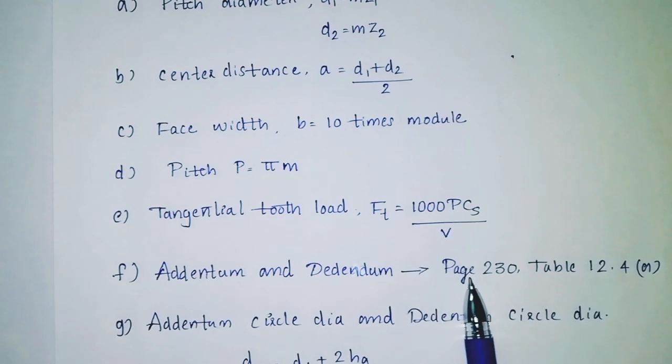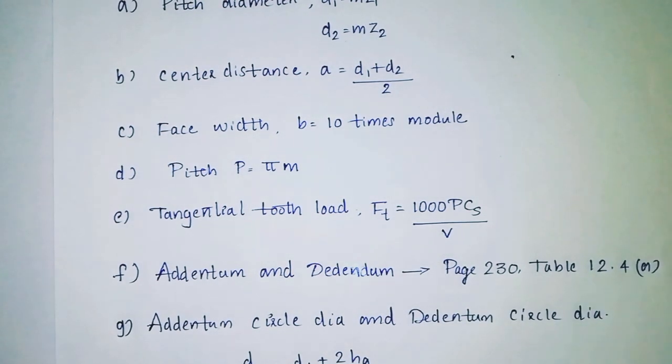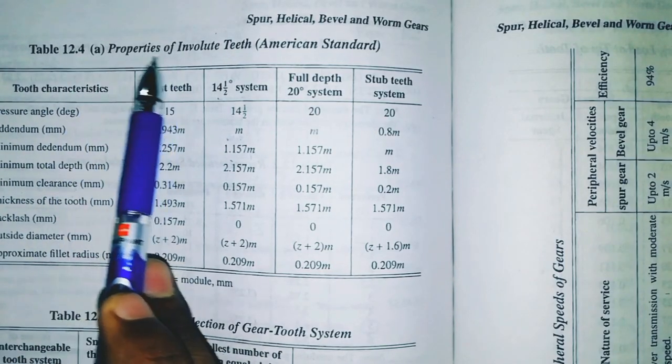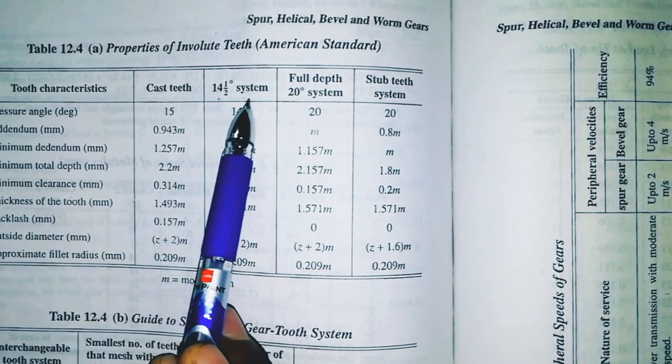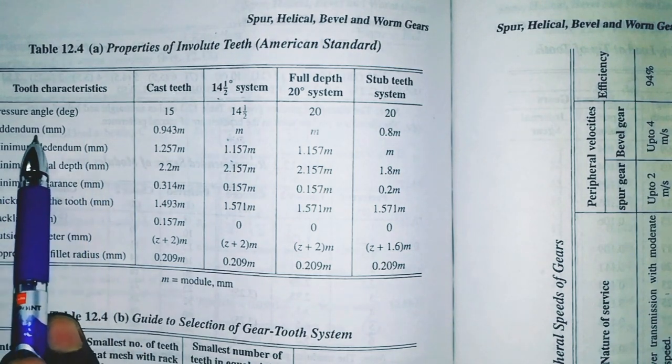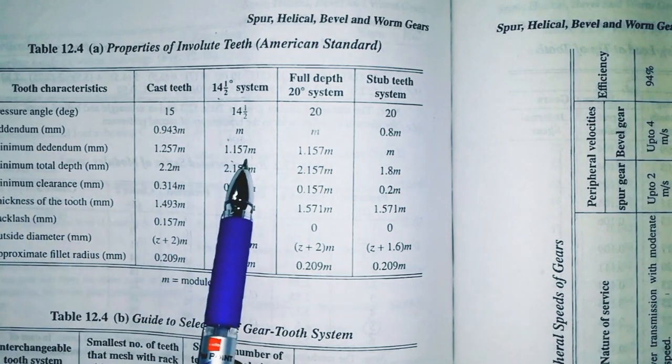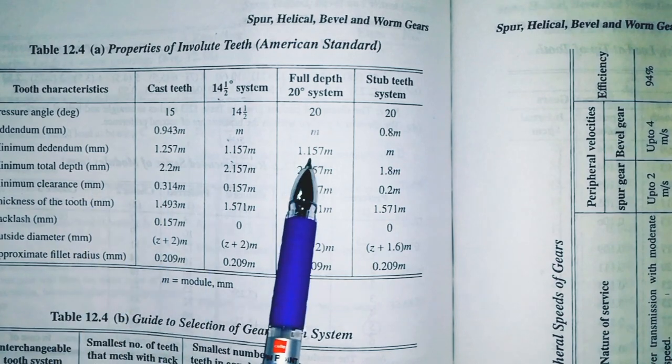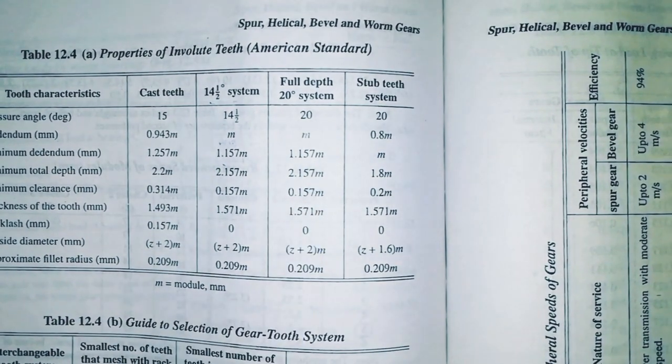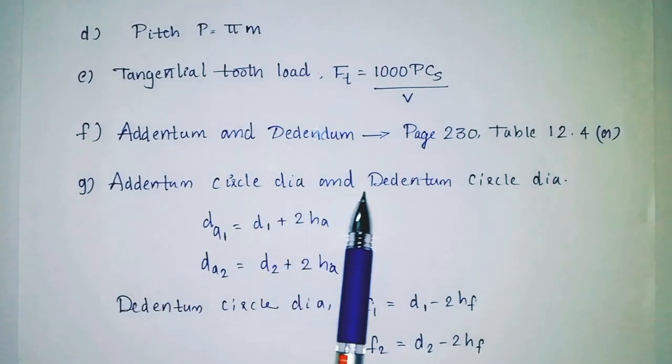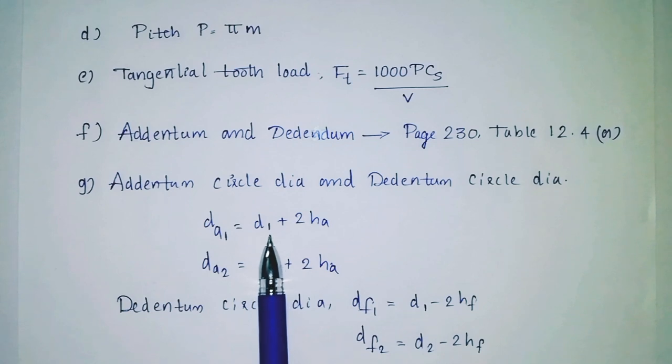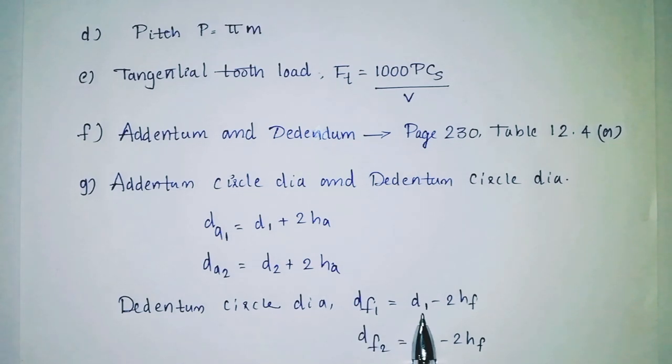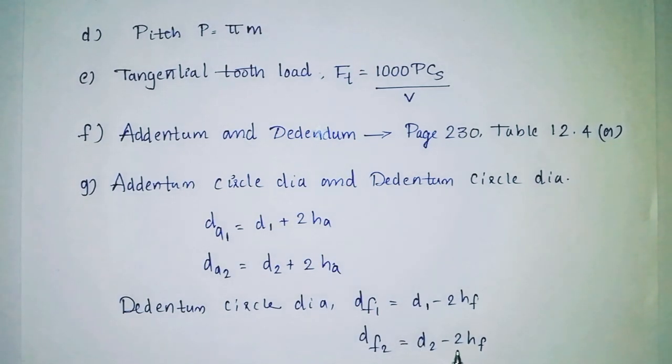Addendum and dedendum. Page number 230, table 12.4a: Properties of involute teeth. For 14.5 degree system, addendum is m and dedendum is 1.157 m. For full depth 20 degree system, addendum is m and dedendum is 1.157 m. Addendum circle diameter: da1 equals d1 plus 2ha, da2 equals d2 plus 2ha. Dedendum circle diameter: df1 equals d1 minus 2hf, df2 equals d2 minus 2hf.